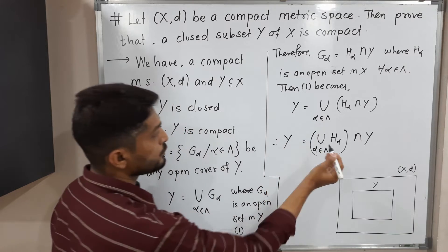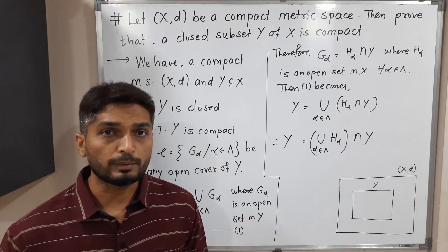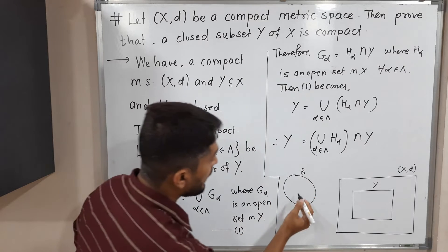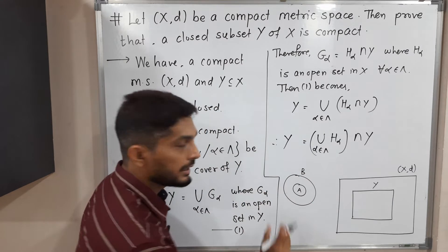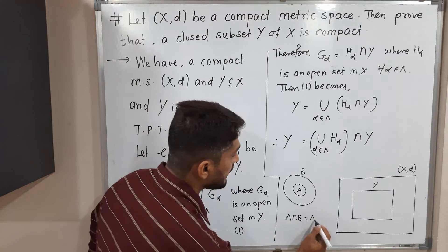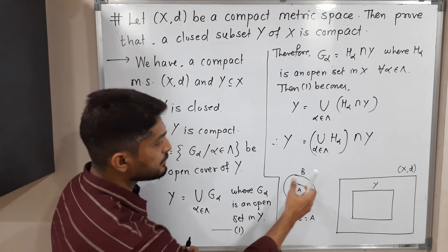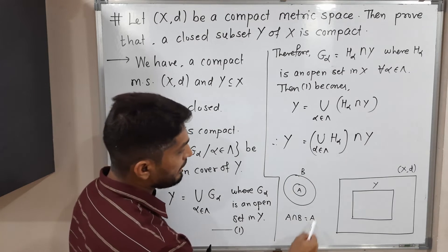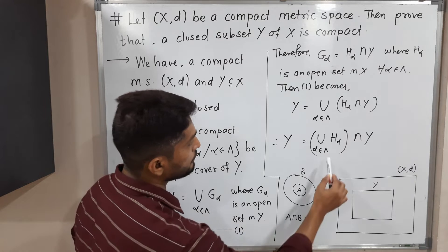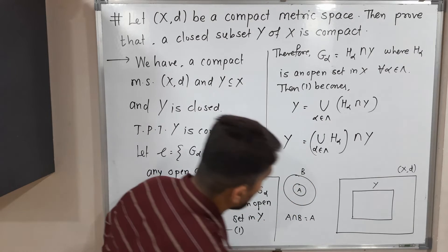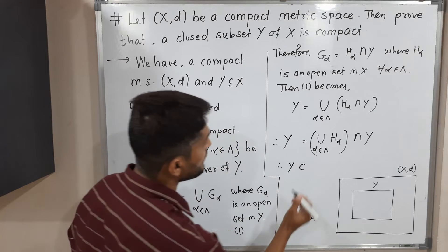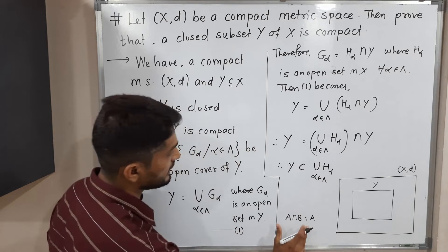From this, what can we write? Suppose this is set B and we have set A which is a subset of B. Then A intersection B equals A, because A is a subset of B — the common part is A itself. Similarly here, applying the same logic, we can write: Y is a subset of the union of H_alpha for alpha in lambda. Let us call this statement 2.